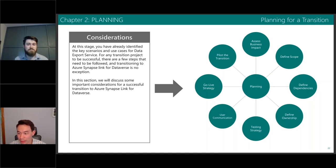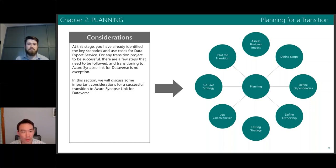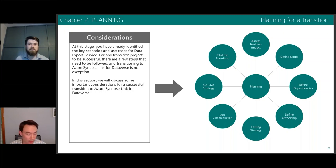Define what the dependencies are and who the owners are, so you can allocate the resources and budget accordingly. Have the right timeline for this, and come up with a testing strategy — who's going to do the UAT, who's going to do the non-functional testing.